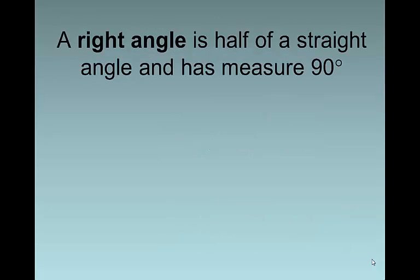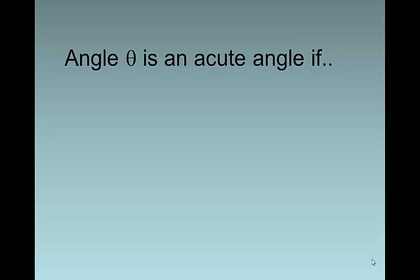A right angle is half of a straight angle and has a measure of 90 degrees. An angle is acute. You probably used to say that an angle was acute if it was less than 90. But we've got to be a little tighter with our definition. Because if we say less than 90, that would include negative angles. And negative angles, while less than 90, are not acute. So we say that an angle between 0 and 90 degrees is acute.